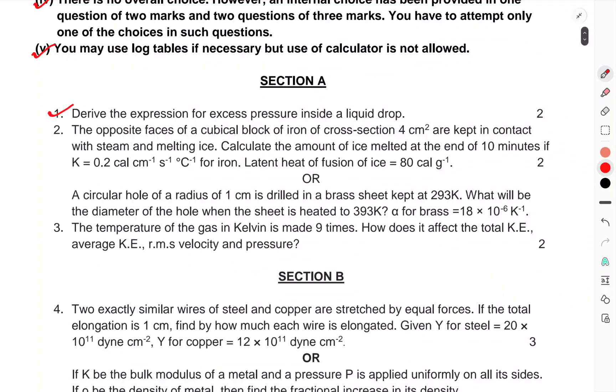Section A: Question 1, derive the expression for excess pressure inside a liquid drop. Question 2, the opposite faces of a cubical block of iron of cross section 4 cm² are kept in contact with steam and melting ice. Calculate the amount of ice melted at the end of 10 minutes if K = 0.2 cal cm⁻¹ s⁻¹ °C⁻¹ for iron. Latent heat of fusion of ice = 80 cal/g.